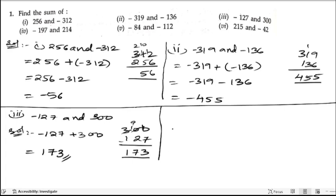Next, fourth bit. So minus 197 and 214. In place of 'and' we will keep plus sign, so plus 214.